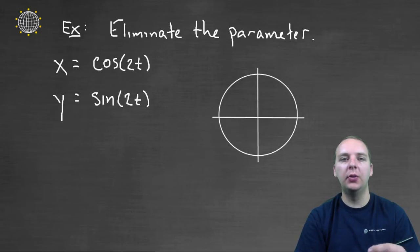Here we have an example where we are trying to eliminate the parameter for this parametric equation. Now one thing I can tell right off the bat is that this guy is going to sketch out a circle.